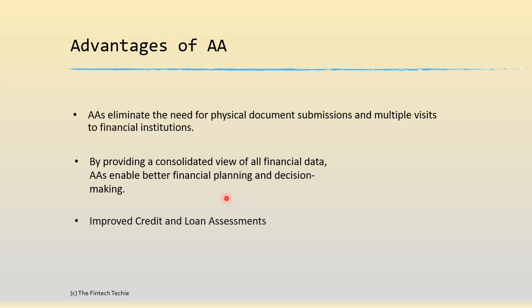The advantages of AA include eliminating the need for physical documents — you no longer need to visit the offices of individual financial institutions. It empowers the FI user to get data from FI providers and provides a consolidated view of all financial data, which is very useful for RIAs wanting a 360-degree view. In the context of the Unified Lending Interface (ULI) which is coming up, it gives improved credit and loan assessment, meaning loan approvals can be done quickly because everything is now digital.